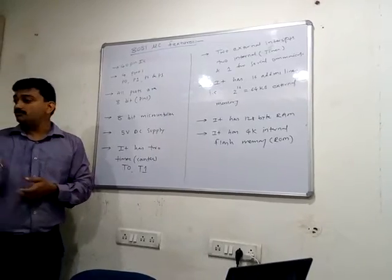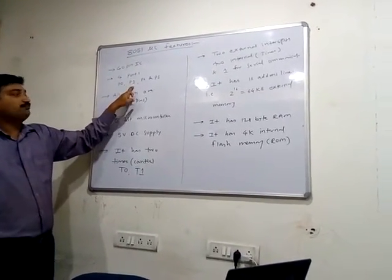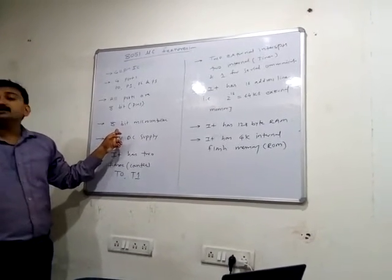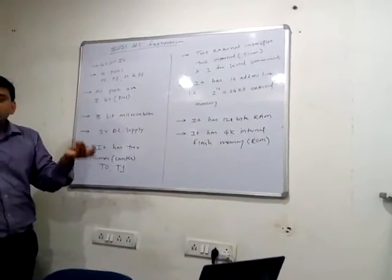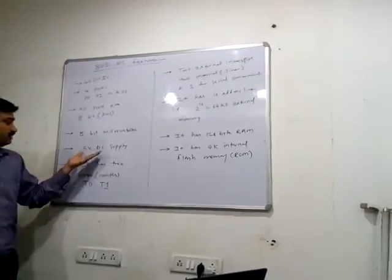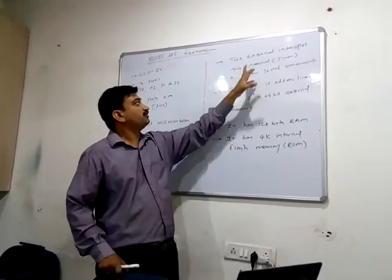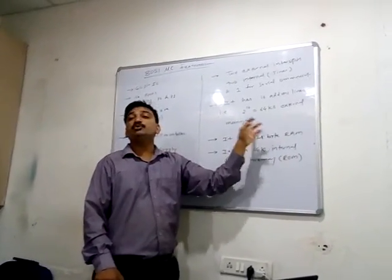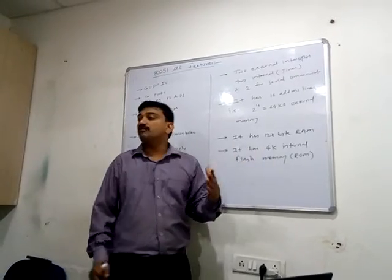To summarize the features of the 8051 microcontroller: it is a 40-pin IC with 4 ports P0, P1, P2, and P3; all ports are 8-bit; it is an 8-bit microcontroller whose ALU handles 8-bit data; it requires a 5-volt DC supply; it has 2 timers T0 and T1; 5 interrupts — 2 external, 2 internal, and 1 for serial communication; 16 address lines allowing 64KB external memory; 128-byte RAM; and 4KB internal flash memory.